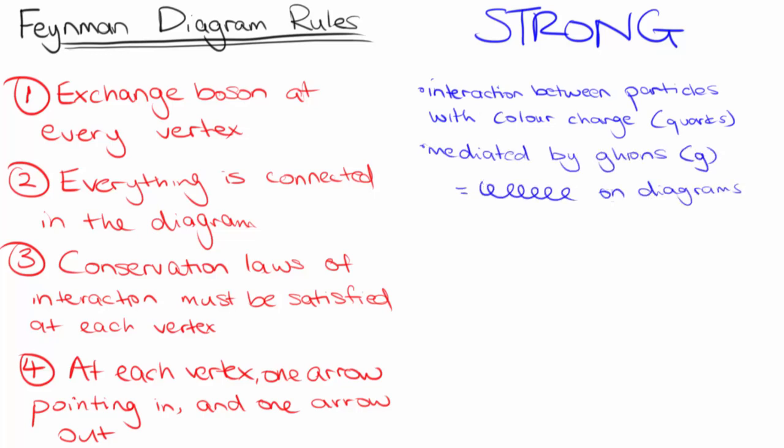Recall from Liz's videos that the color charge of a quark can be red, green, blue, anti-red, anti-green, or anti-blue. Gluons carry a combination of two colors: a red, green, or blue, and an anti-red, anti-green, or anti-blue.